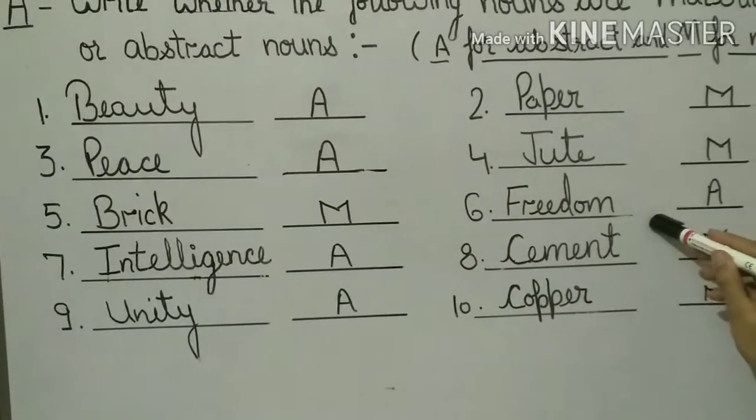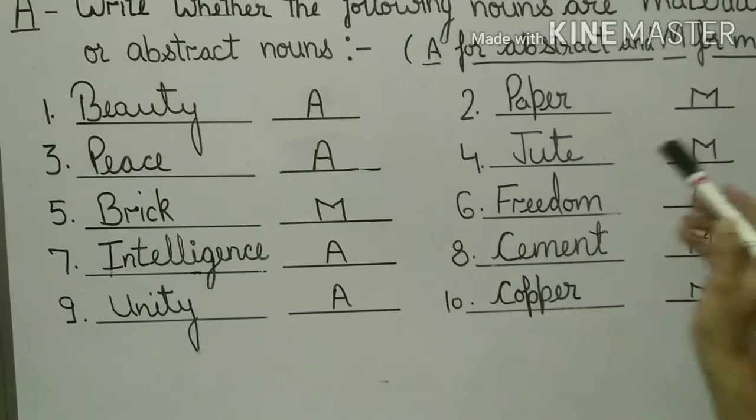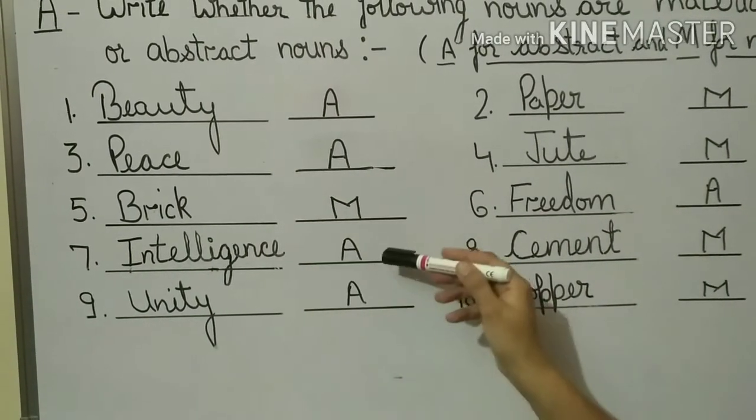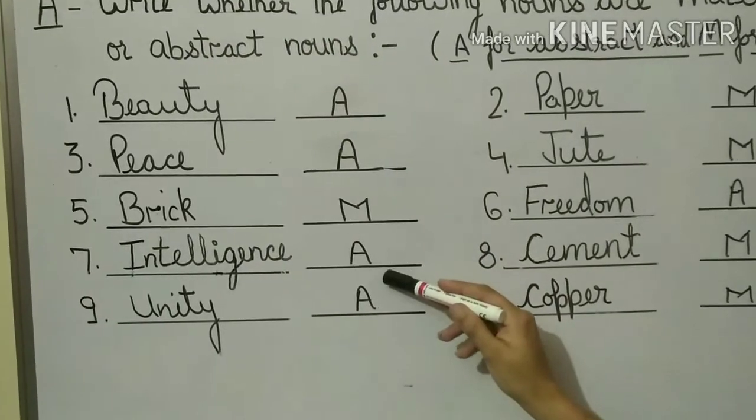Freedom. Freedom we can feel. That is abstract noun. Intelligence. We can see an intelligent person but intelligence we can only feel. So that is abstract noun.